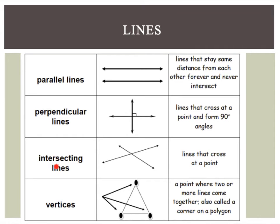And we have intersecting lines. Intersecting lines are any two lines that cross at any point. So, it doesn't have to be perfect like a perpendicular line. It's anywhere that it crosses.